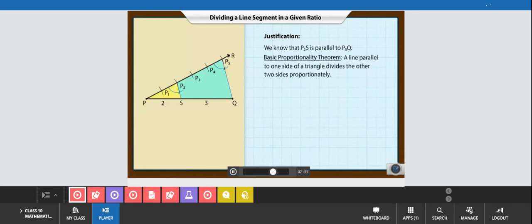According to the basic proportionality theorem, a line parallel to one side of a triangle divides the other two sides proportionately. So, the ratio of the lengths of segments PP2 to P2P5 is equal to the ratio of the lengths of segments PS to SQ.